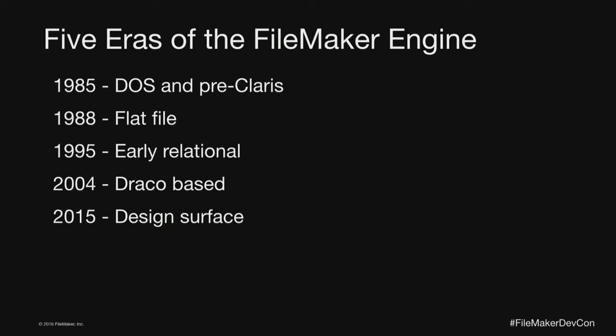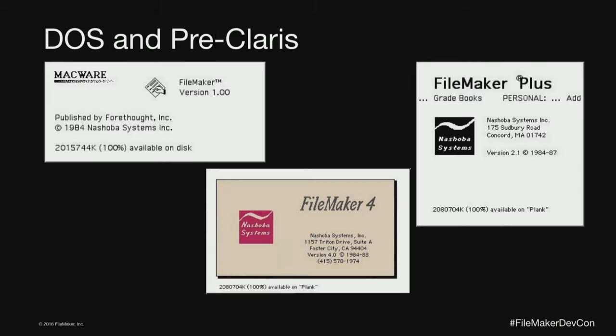There are five eras that I split the FileMaker engine into. Last year when I presented some of this in Europe, I was saying four, but now that we've gone into the design surface it's really five eras. The first era happened back around 1985 — what we call the DOS pre-Claris era, before Claris purchased the product. The splash screens show FileMaker 1, then FileMaker Plus, then FileMaker 4. The numbering doesn't get any better going to the next slide.